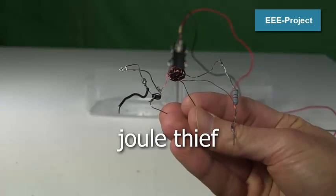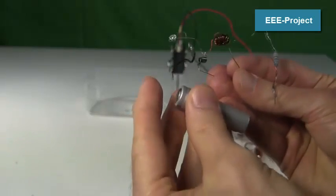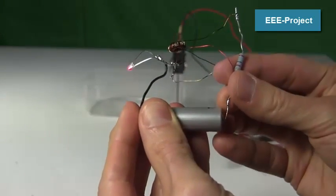That's where this circuit comes in. It's called a joule thief circuit. Here it's being powered by a battery whose voltage is so low, it's considered dead.